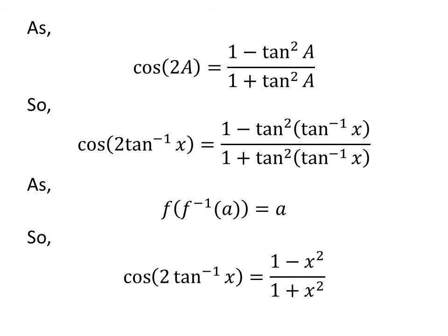As arc tangent is the inverse of tangent, so tangent of arc tangent of x is equal to x. So, cosine of 2 times arc tangent of x is equal to 1 minus square of x over 1 plus square of x. So, we have found out the value.